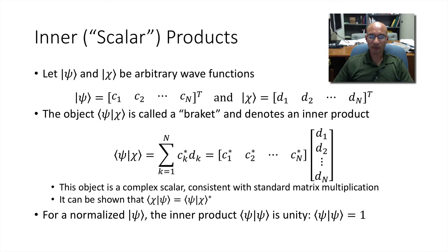Another important concept is the concept of scalar products. Let's let psi and chi be arbitrary wave functions or vectors. And we give them these representations. I wrote them as rows, but I give them a transpose operator to indicate that really, these are columns. Now the object psi chi is called a bracket. And it denotes an inner product. We form this bracket. And you take the kth element of psi.